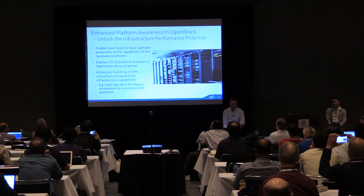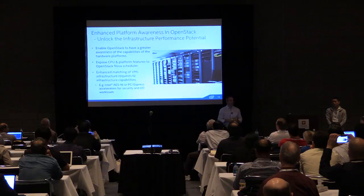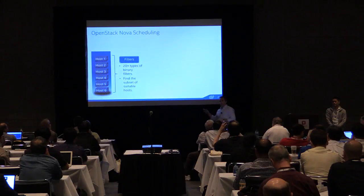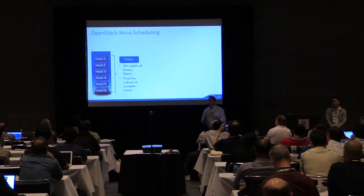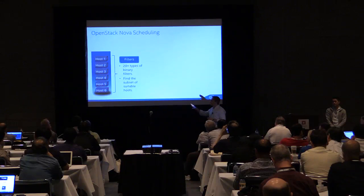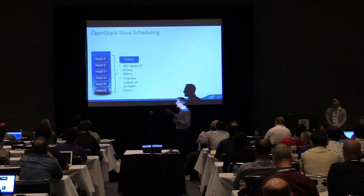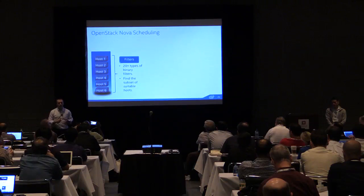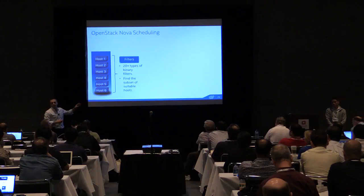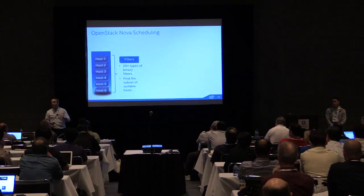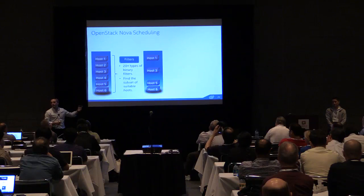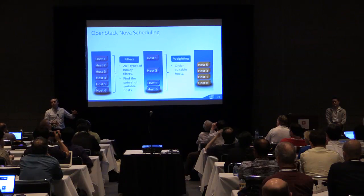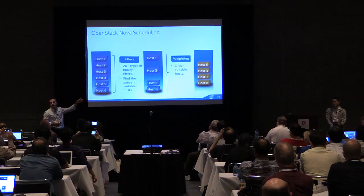We need to expose CPU and platform-related features into Nova and the scheduler to provision based on workload requests. The filter scheduler in Nova is a two-part process with 20-plus filters — covering host aggregates, CPU load, disk allocation, and a compute capabilities filter. These filters are binary in nature — pass or fail — and combined, they identify the right subset of platforms. Once you have that subset, a weighting discipline determines deployment order, currently based primarily on RAM utilization.